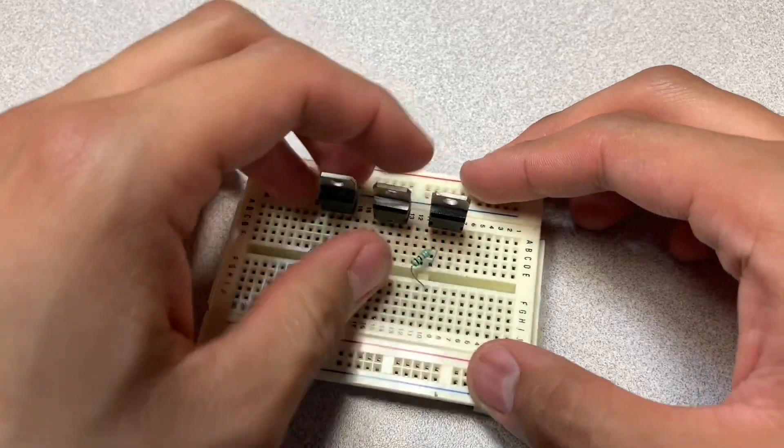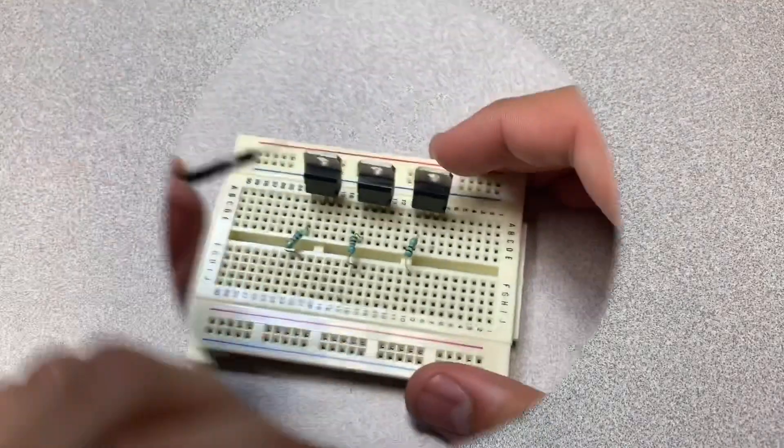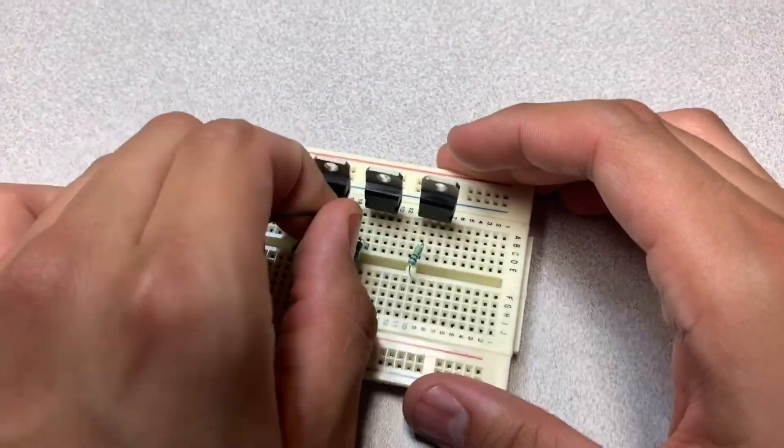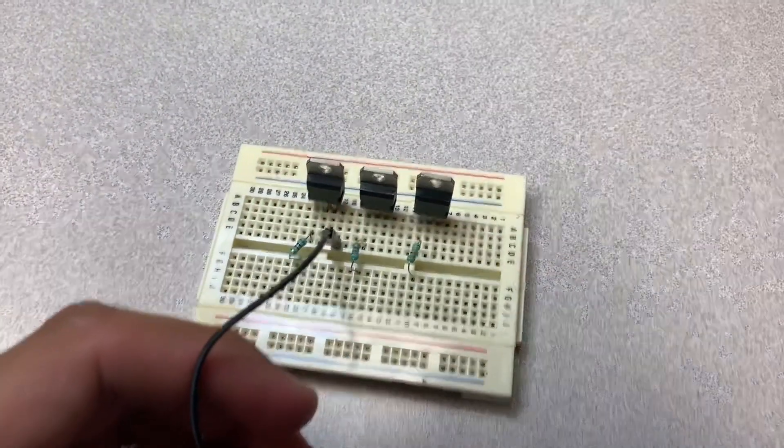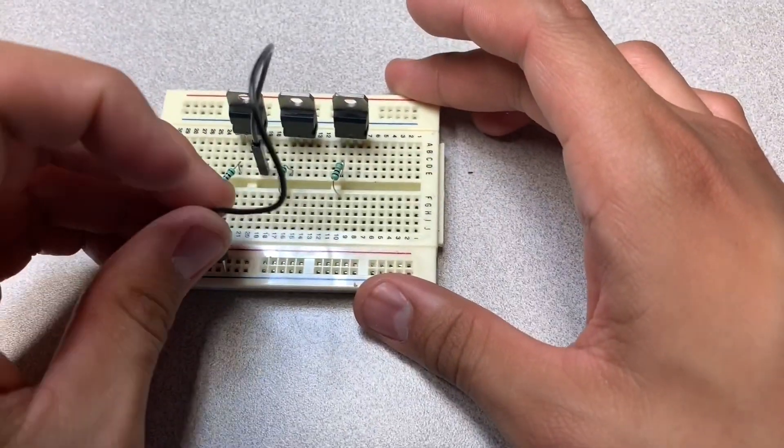Once our setup is complete, we have to ground our transistors. As we saw in our previous picture, we're gonna use the third pin, which is the emitter, and with a cable or jumper, we're gonna ground it. We're gonna use our blue line in this case of our breadboard.